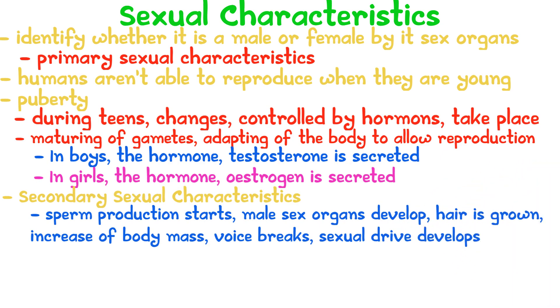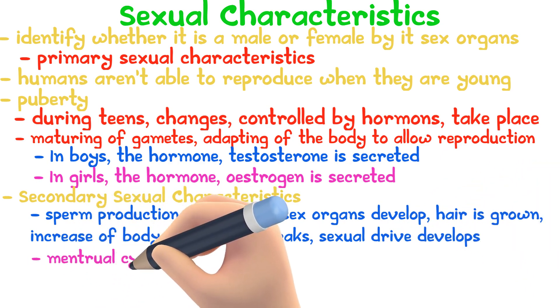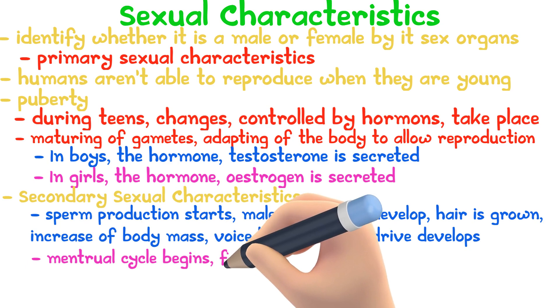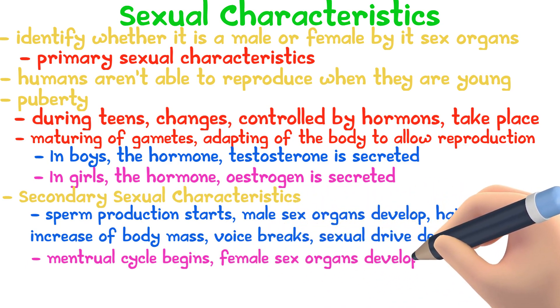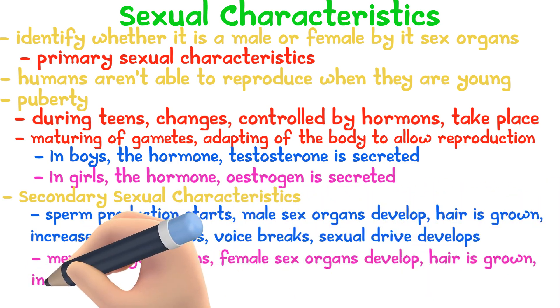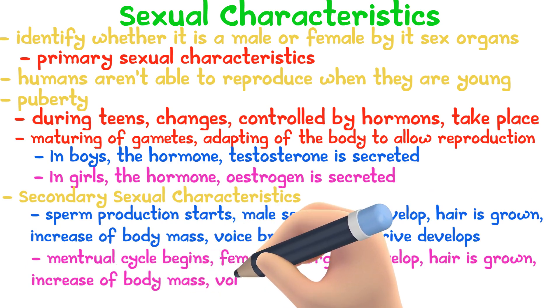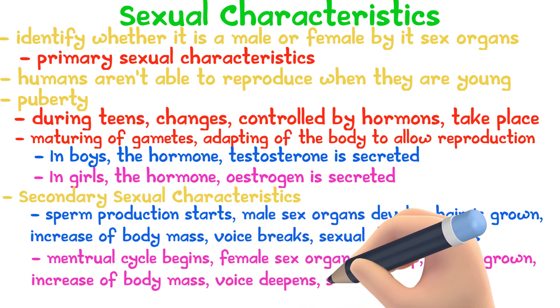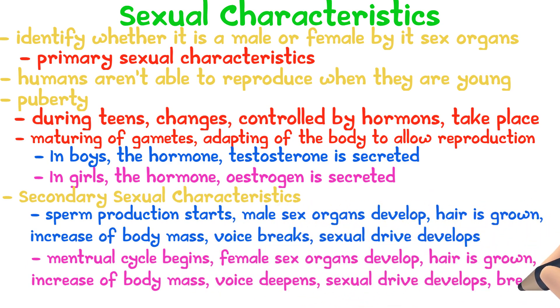In girls during puberty, the menstrual cycle begins, female sex organs develop, there is a growth of hair, increase in body mass, the voice deepens, the sexual drive develops, and breasts develop.